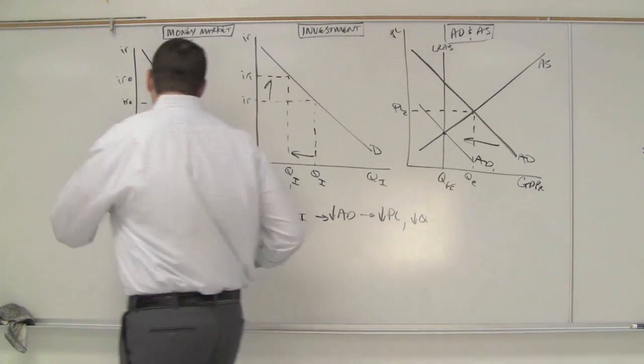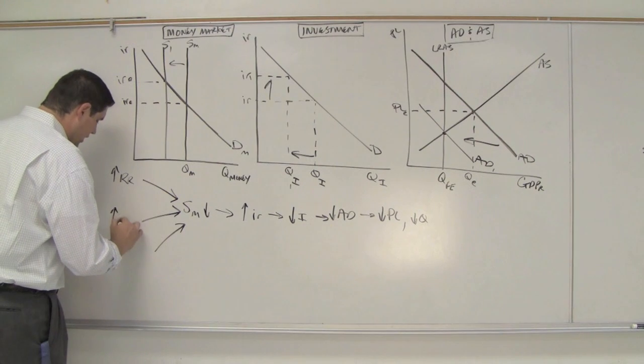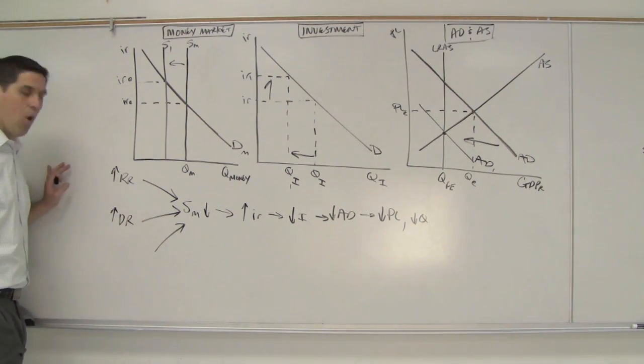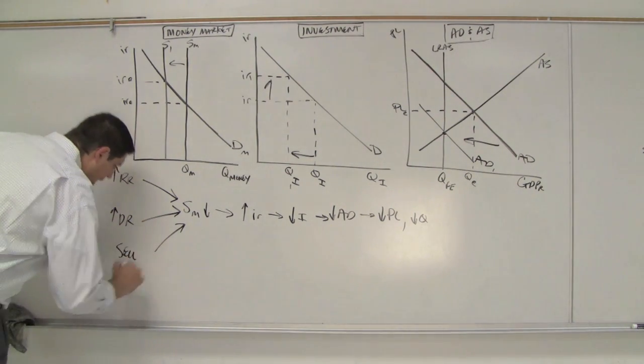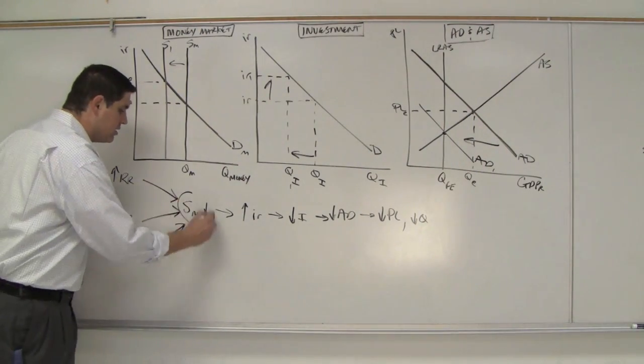Well, the Fed could, first, increase the reserve requirement, they could increase the discount rates, or they could sell bonds. When the government does any one of these three things, it decreases the supply of money,